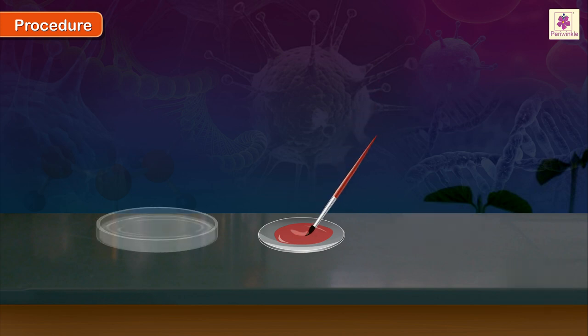Use the brush to transfer the stained peel to the petri dish. Use a clean brush to transfer the stained peel to the center of a clean, dry, and blank glass slide.